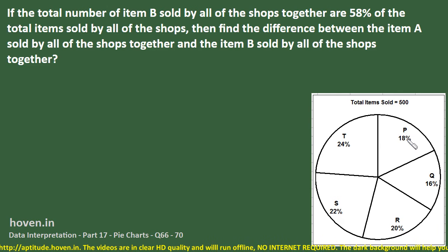Another thing given in the first statement, which I haven't written here to save space, is that each of the shops is selling two types of items: item A and item B. So if P is selling 18% of 500, then in its share some items are of A type and some are of B type. Similarly for Q, R, S, and T.